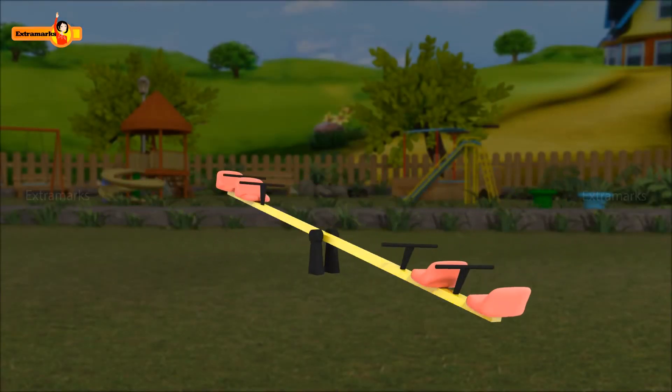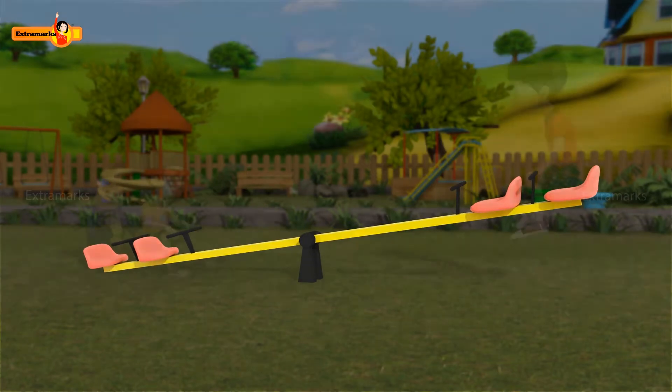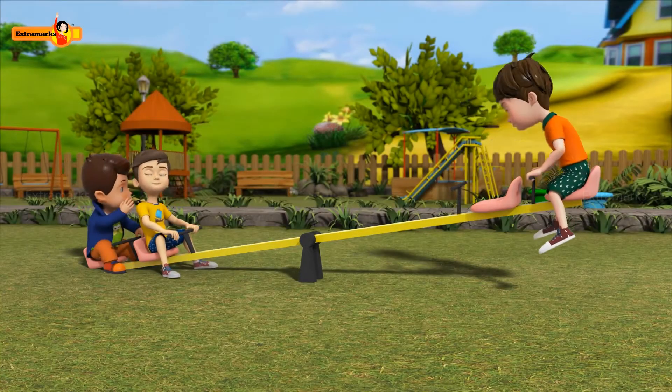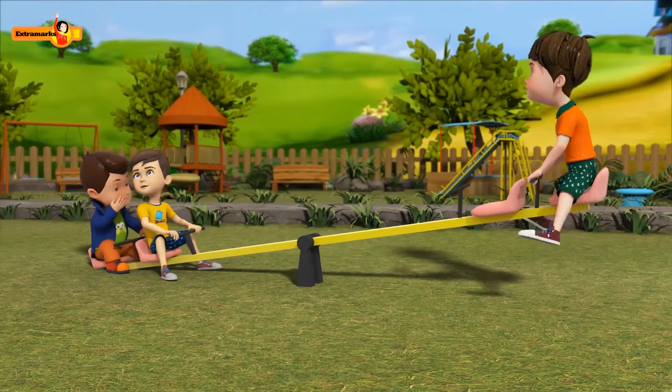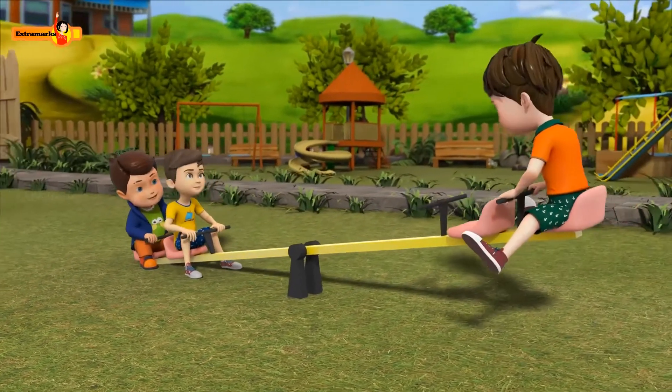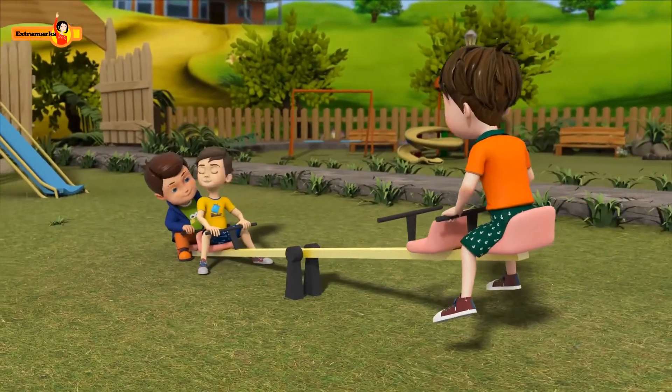Seesaw is a swing made of board, balanced at the center. Ron, John and Matthew are trying to take position on a seesaw. They have similar weights. Ron and Matthew go to one side and John on the other.